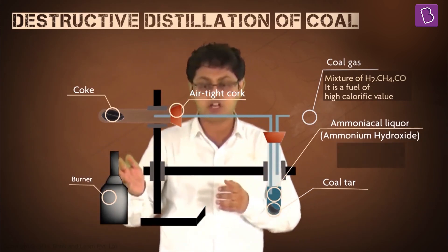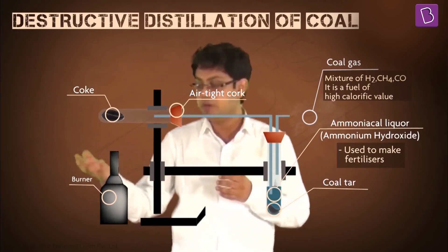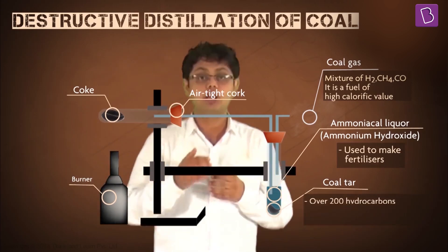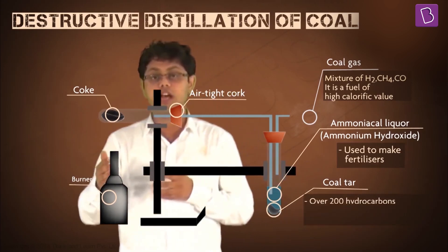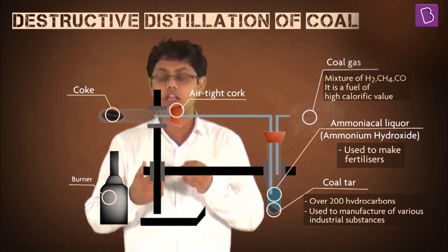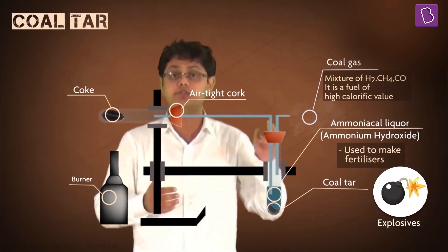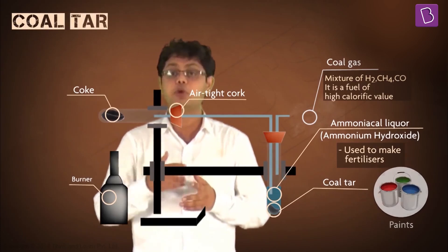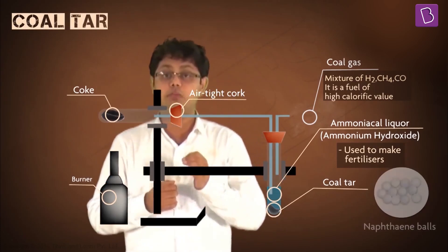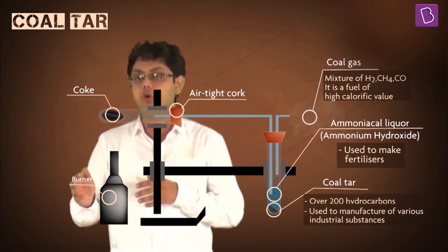Liquor ammonia or ammonium hydroxide is used to make fertilizers. The coal tar accumulated in the test tube is composed of around 200 various substances. The products obtained from coal tar are used as starting material for manufacturing various substances used in everyday life and in industries, like synthetic dyes, drugs, explosives, perfumes, plastic, paints, photographic material, roofing material, etc. Interestingly, naphthalene balls used to repel moths and other insects are also obtained from coal tar.